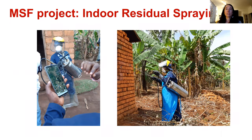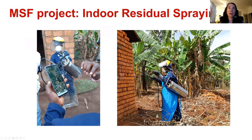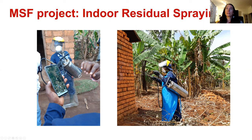Those of you who have been with us longer have experienced this technique when we mapped Burundi last spring. It's called Indoor Residual Spraying. On the left you can see a team leader looking at his phone to update progress — marking houses that have been visited, and those treated with insecticide, which gives six to nine months of long-term protection against mosquitoes. Houses marked in red were closed and could not be treated.